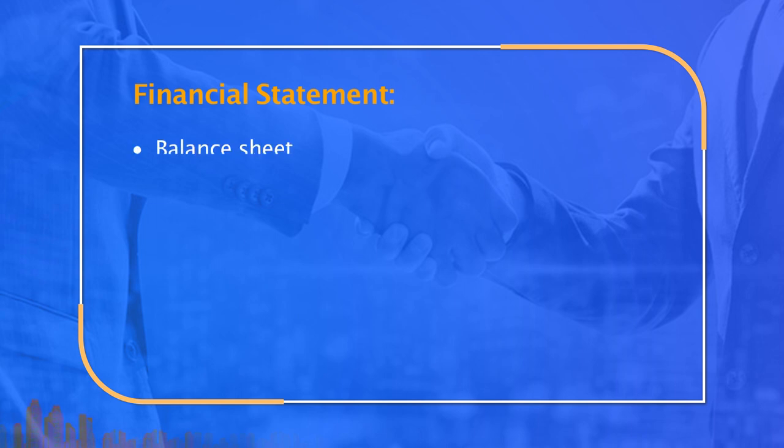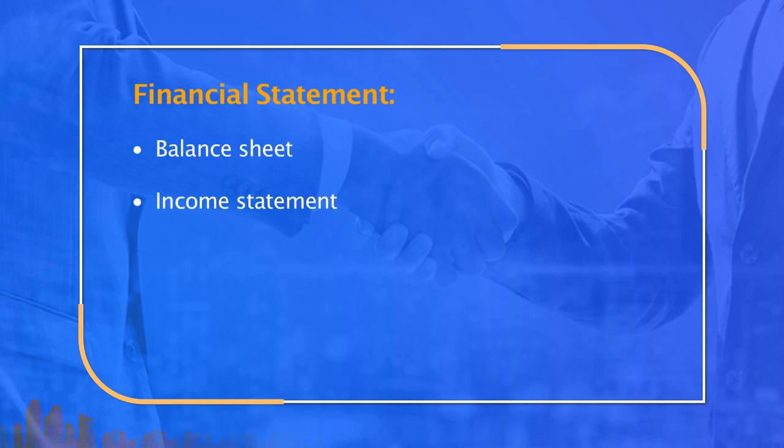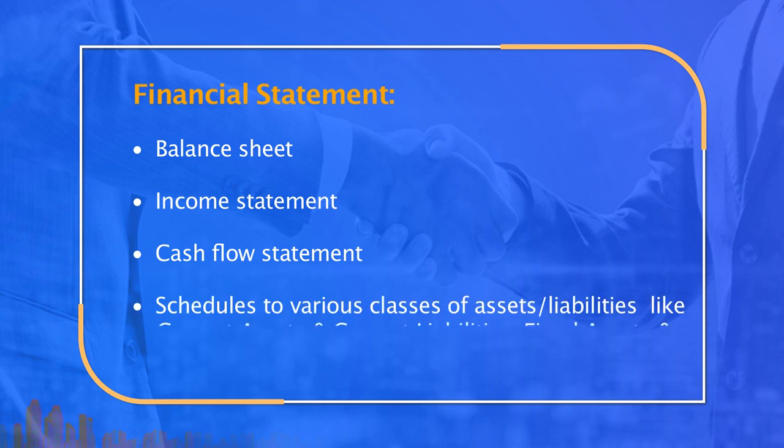Financial statements include: balance sheet, income statement, cash flow statement, and schedules to various classes of assets and liabilities such as current assets, current liabilities, fixed assets, and fixed liabilities. These schedules are annexed with the financial statements but are not available to the public.